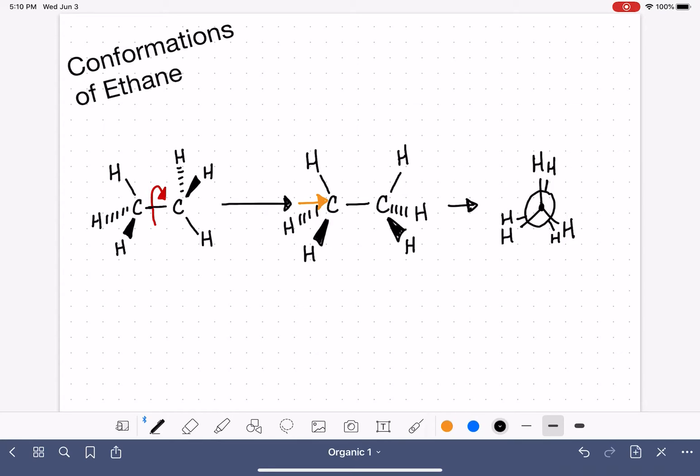All of these hydrogens are hanging out in the back. They're there, but there's no way for us to draw it perfectly behind the other one. So this is our Newman projection for this particular conformation of ethane.